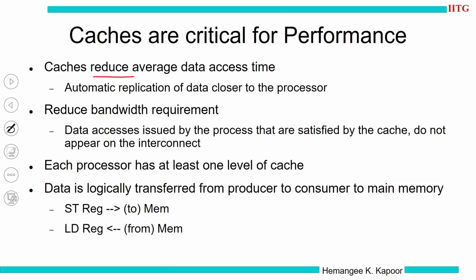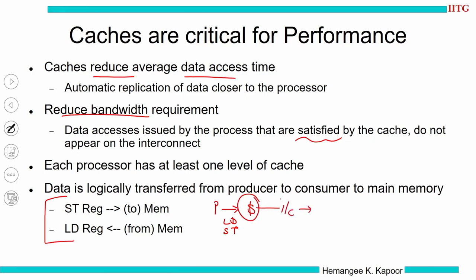The cache reduces data access time and also reduces bandwidth requirements because most accesses are satisfied by the local cache. The infrastructure seamlessly supports load and store operations. A processor does a load or store — from the processor's perspective it only goes to the cache, but underneath it may go over the interconnect to memory and back. This all happens using simple load and store instructions and is transparent to the processor.